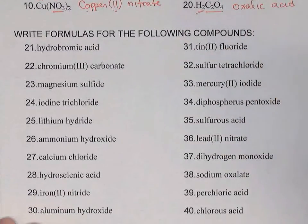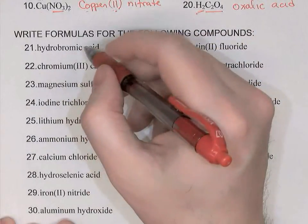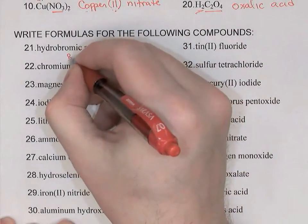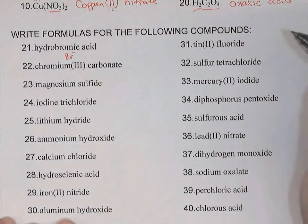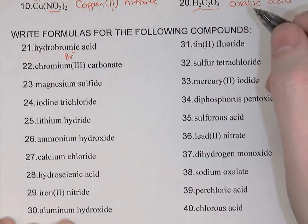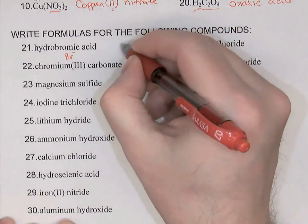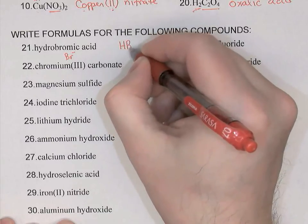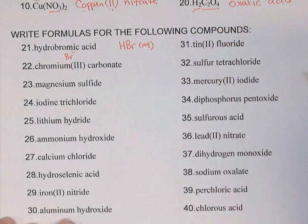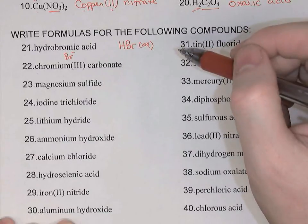Number 21: hydrobromic acid tells me this is a binary acid. Hydrobromic means hydrogen ions are bonded to Br-. Bromide is a halogen on the periodic table, so its charge is -1. Since hydrogen is +1, the formula will just be HBr. To emphasize that it was an acid, I'll put AQ beside it — aqueous — and that's needed only for binary acids.